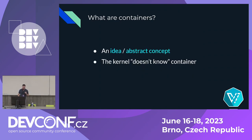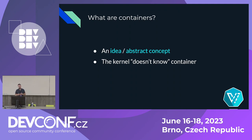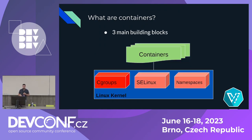Let's talk about what containers are. Containers is basically an abstract concept which can be implemented in many ways. If you ask the kernel, it would say it doesn't know what containers are — from the kernel's perspective, there is no such thing as containers, only building blocks. The three main building blocks for containers are cgroups, SELinux, and namespaces. Very briefly: cgroups is responsible for resource allocation, SELinux for security, and namespaces for isolation.